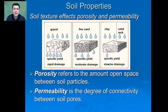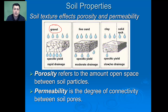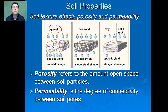Soil texture is going to affect its porosity and permeability. Porosity refers to how much open space we have between the various soil particles, and permeability is the degree of connectivity between those soil pores. Gravel, with its large particles, is very porous and very permeable, allowing most water to pass through. Fine sand is moderate — pretty good porosity but a little less permeability. Clay and solid rock are the least porous and least permeable. Fine textured soil has more pore space and holds more water than coarse textured sandy soils, while coarse textured soils have large well-connected pore spaces and are much more permeable.